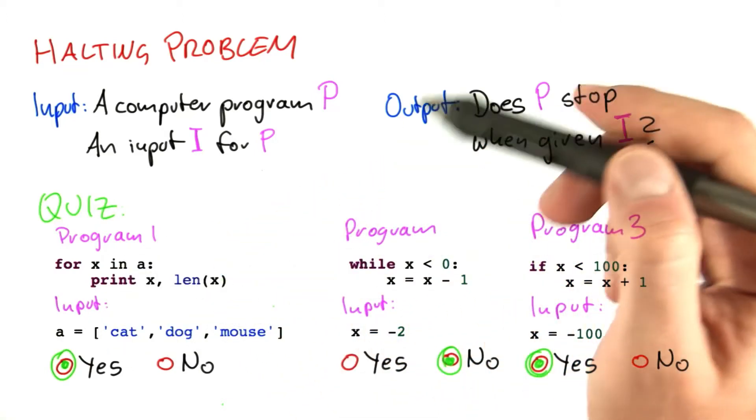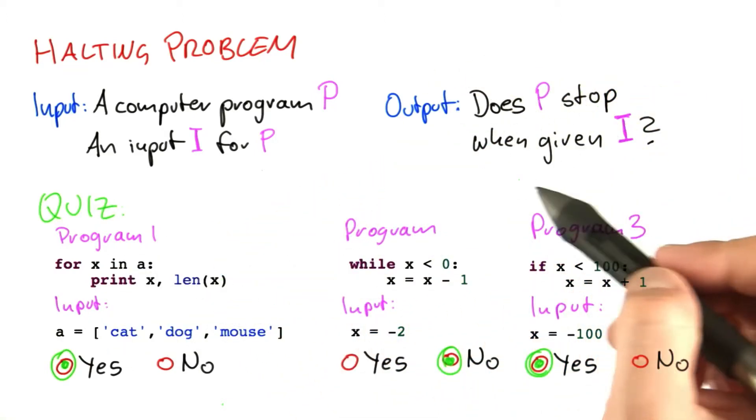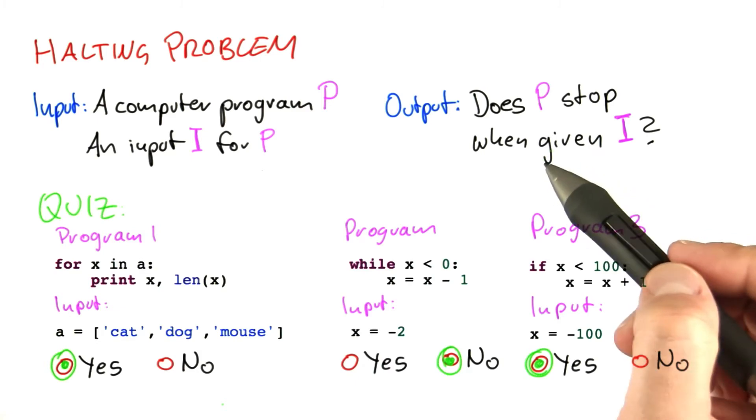For these simple examples here, it's very easy to check if the program stops on a given input or it does not stop.